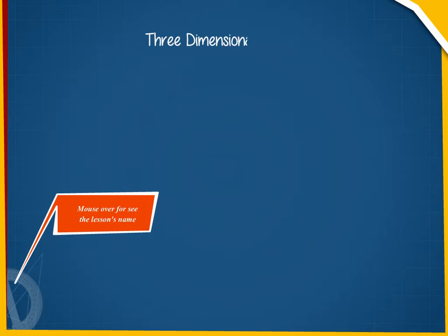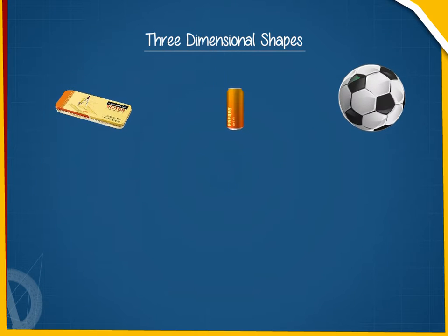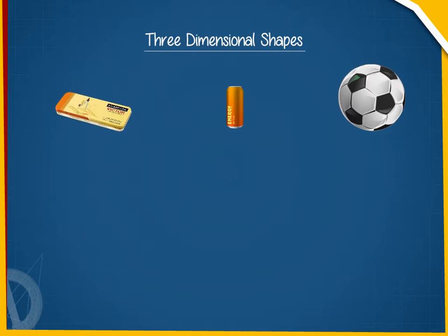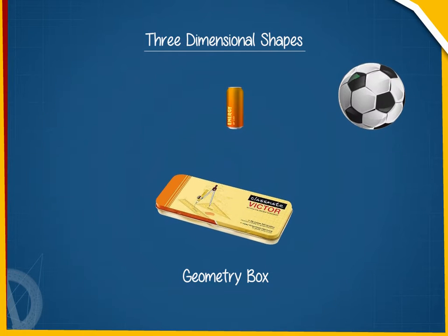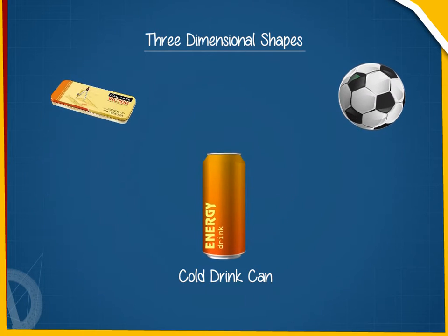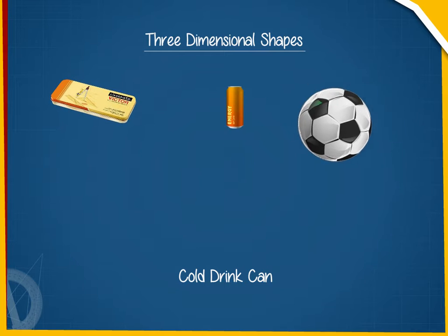Three-Dimensional Shapes. Here are some common objects we are well familiar with: a geometry box, a cold drink can, a football.